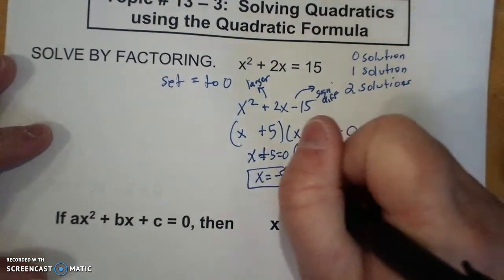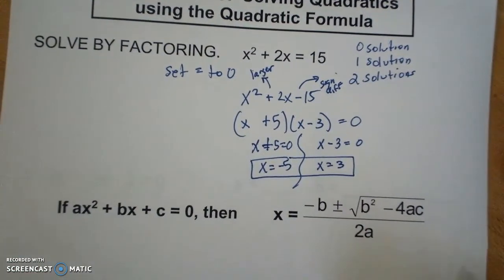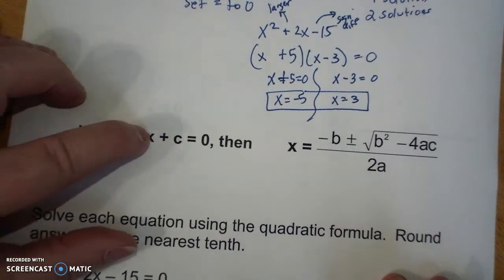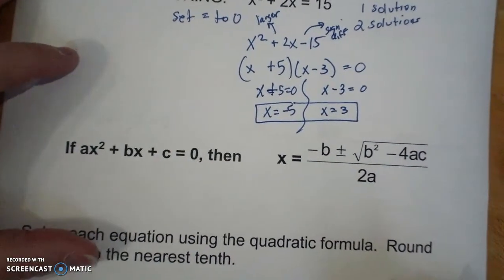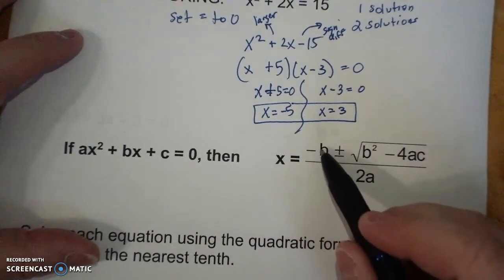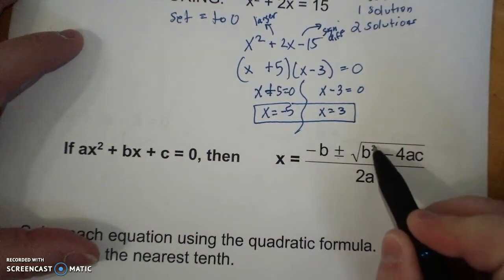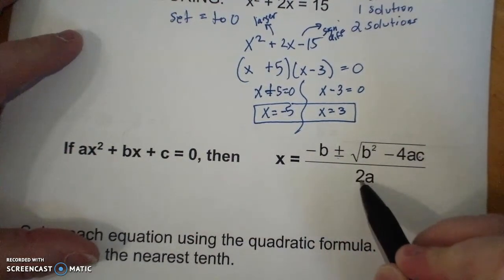These are your roots or solutions. Now, if ax squared plus bx plus c equals 0, then you can say the opposite of b plus or minus the square root of b squared minus 4ac all over 2a.